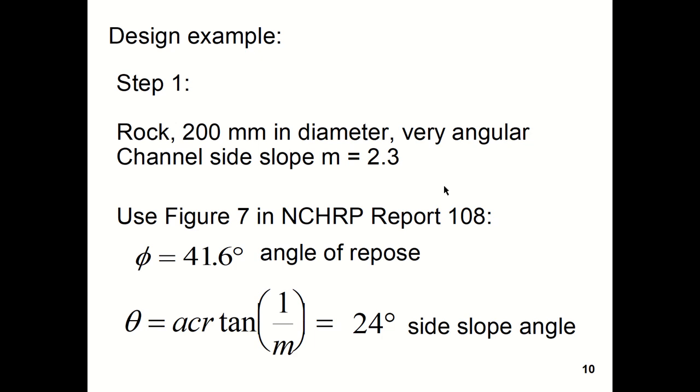And if we want to see the angle of the side slope that we were planning to build the riprap, that would be the arc tangent of 1 over the side slope. It's 24 degrees. Notice that the angle that you plan to build the riprap must be less than the angle of repose.